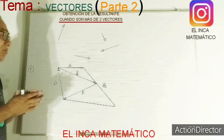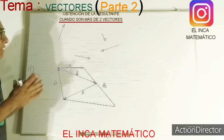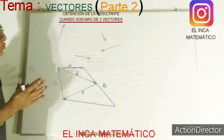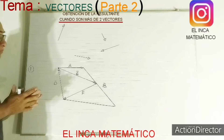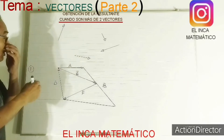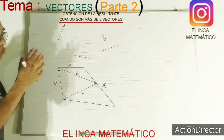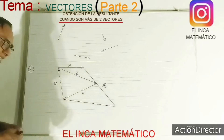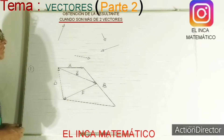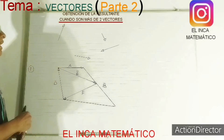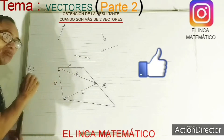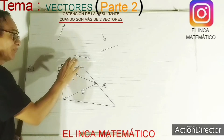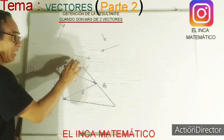Continuando el video anterior, ahora te quiero mostrar cómo se hace para sumar vectores cuando son varios vectores. Aquí, en este primer ejemplo que te muestro, vemos cuatro vectores. Cuando son bastantes, lo que se hace es lo siguiente: empiezas a desplazarlos. Como te había dicho, se puede mover en forma paralela a la posición en la que está.